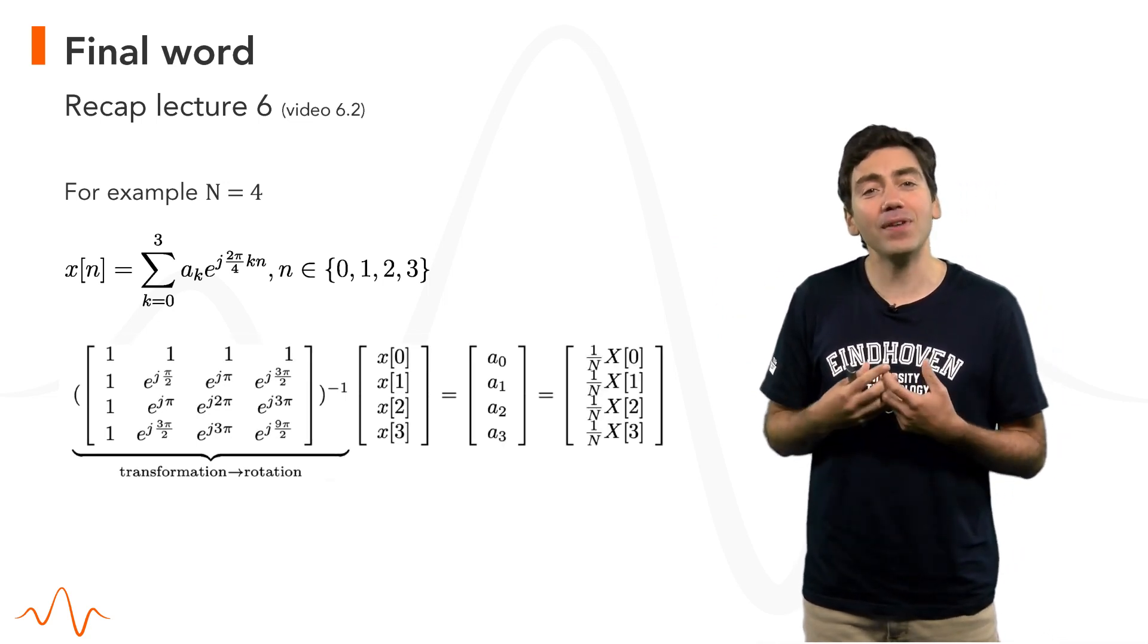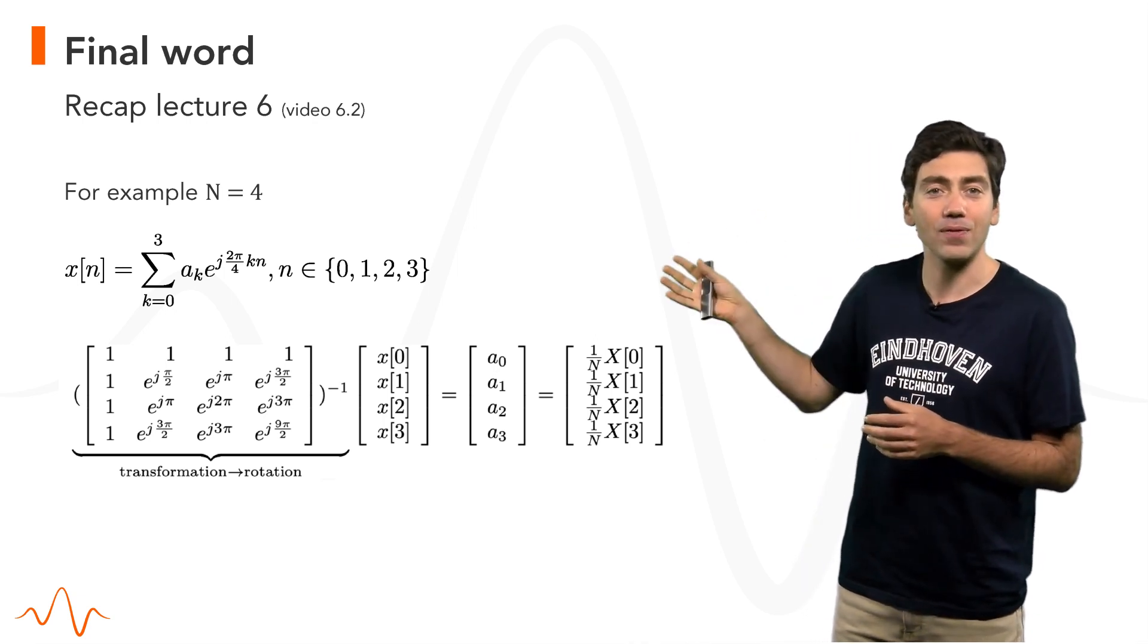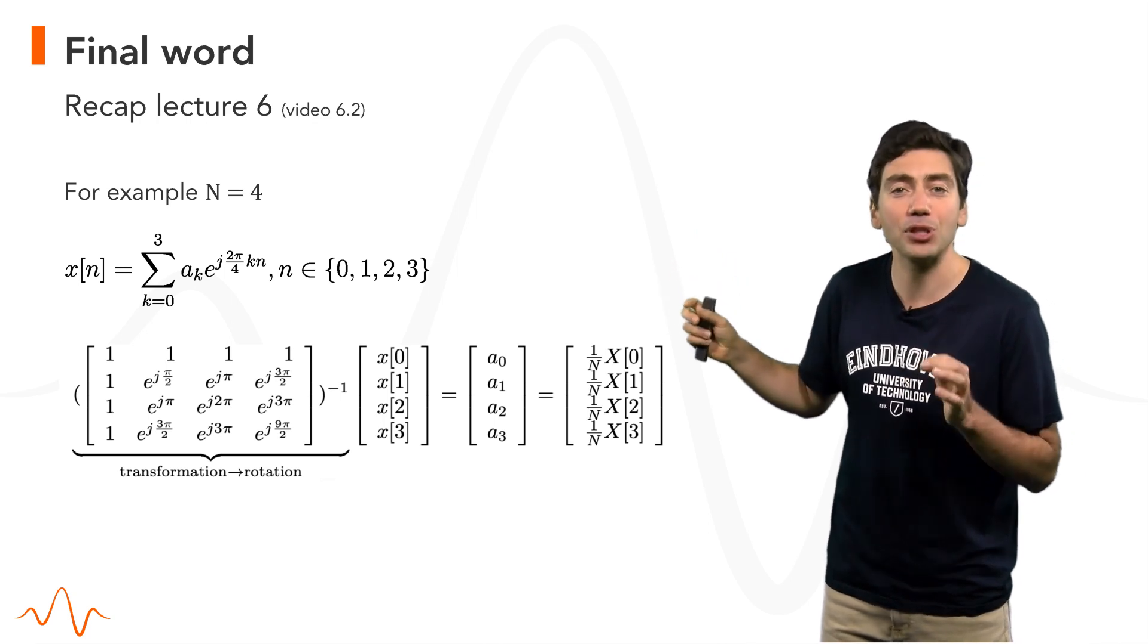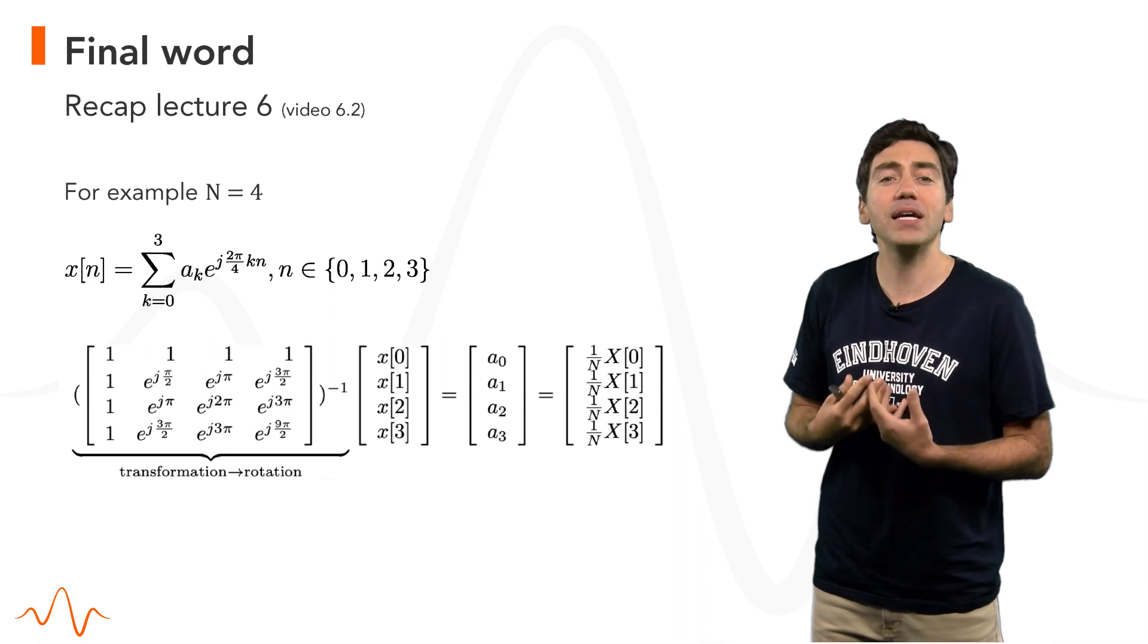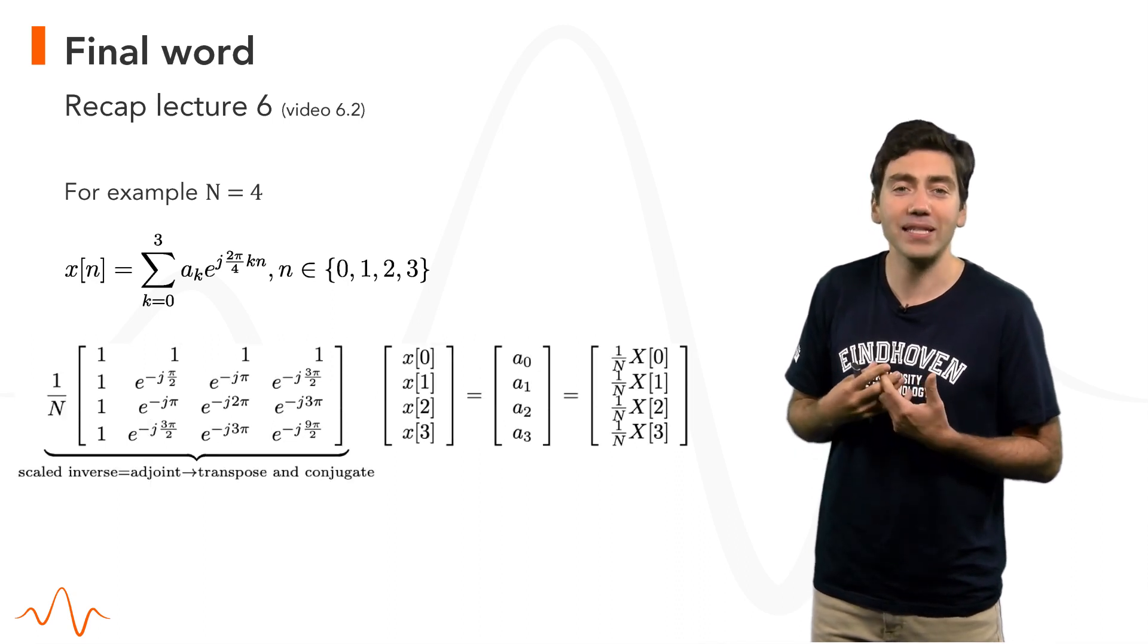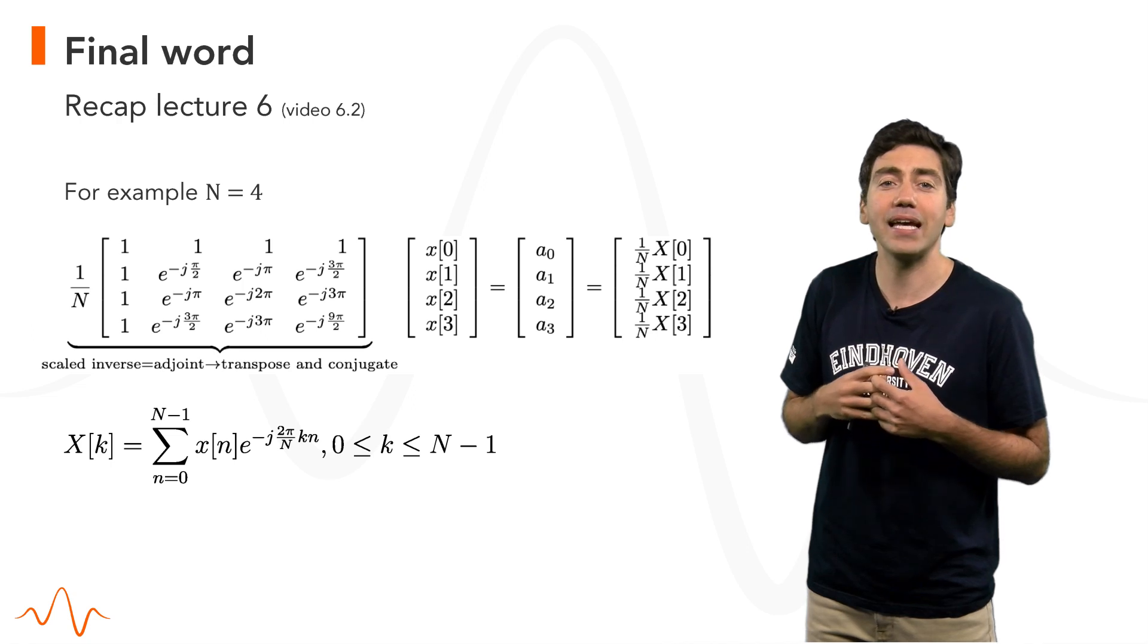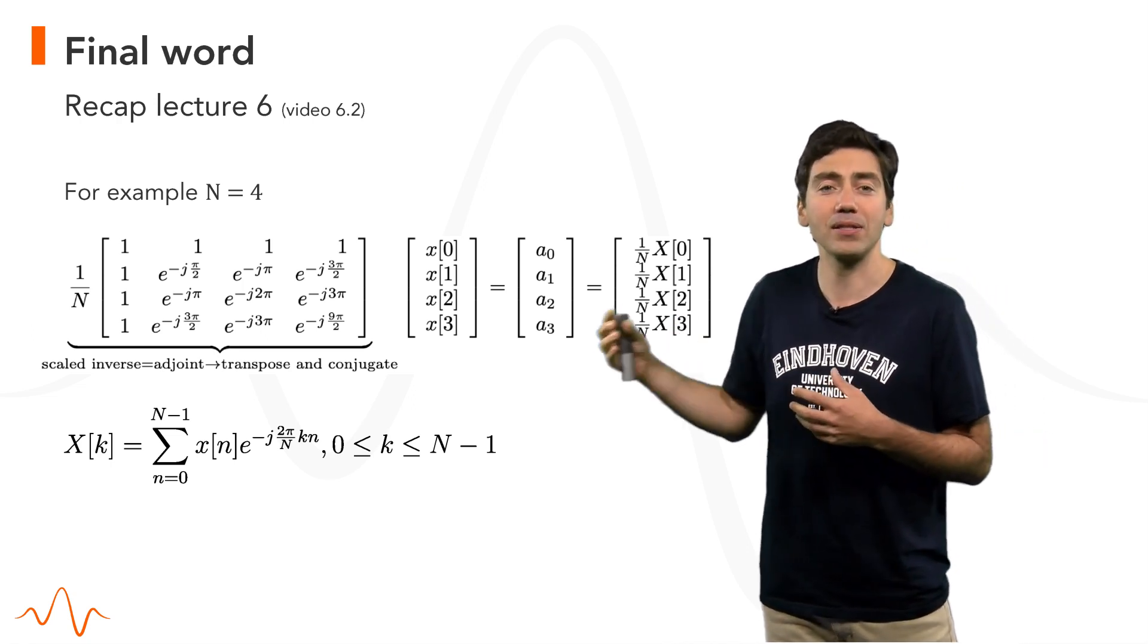This means that we can write the DFT values of a signal as a rotation matrix times the signal itself. Each DFT value, capital X of k, is the projection of the signal with length capital N into a basis vector corresponding to a complex exponential of minus j 2 pi over capital N, k, n, ranging from 0 until capital N minus 1.